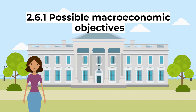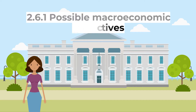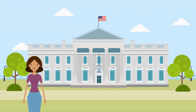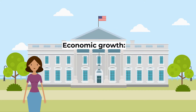Let's start by looking at the possible macroeconomic objectives of a government. Governments intervene in the economy in an attempt to improve its economic performance. The government has four key macroeconomic objectives. The first is economic growth. In the UK, the long-run trend of economic growth is about 2.5%. Governments aim to have sustainable economic growth for the long run.